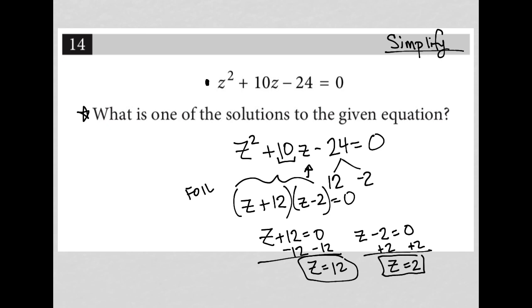So z equals negative 12 and z equals positive 2. So what is one of the solutions to the given equation? I'm going to go with the positive one here and just say 2 is one of these solutions. So there's the answer.